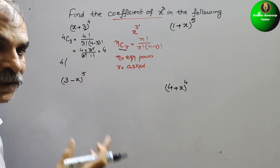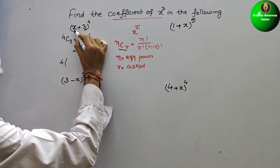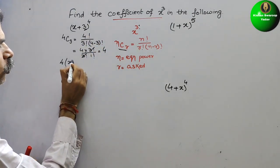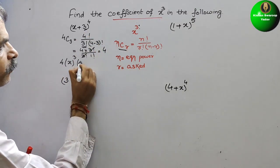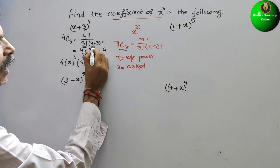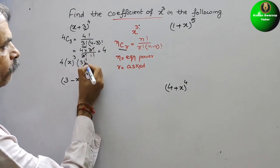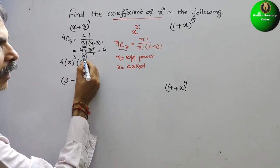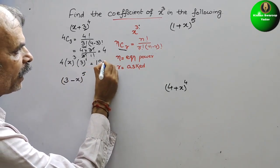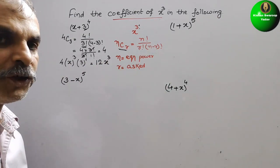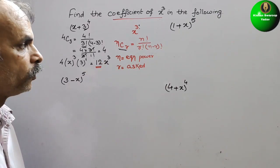Next, for the first term — what they have asked — this is first term, so that means here it will come as X cube. And for the second term, that is 3, and the power is 1, since 4 minus 3 is 1. So now if you solve this, 3 to the power 1 is 3, 3 into 4 is 12. So you will get 12 X cube. So your coefficient is 12.